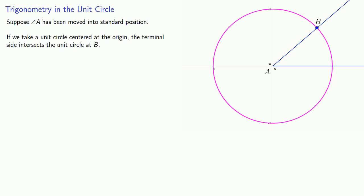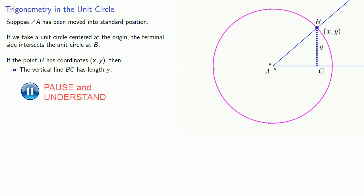Since we're on a set of coordinate axes, we can say that this point B has coordinates x, y. Now let's consider those coordinates a little bit more carefully. If the point B has coordinates x, y, then this vertical line BC has length y. Likewise, this horizontal line AC has length x.